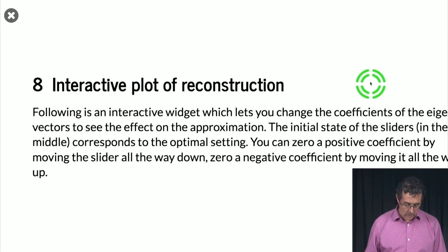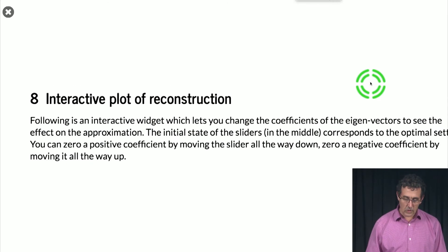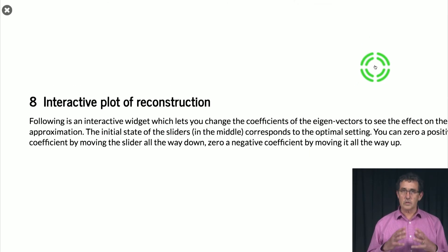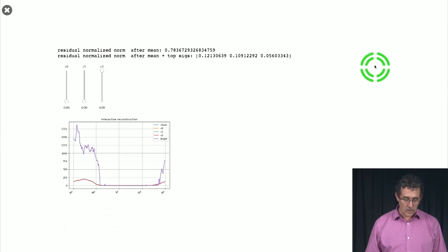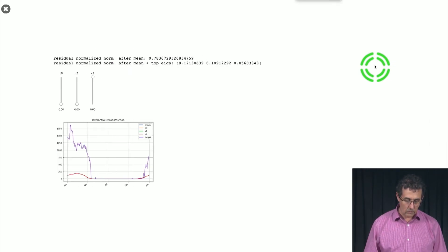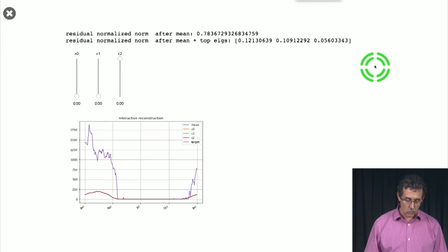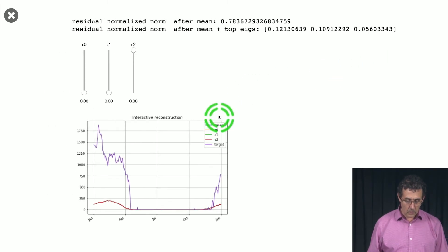Okay. So we've looked at these reconstruction for sets of sequences that we selected according to different criteria. Now, I'm going to show you a different way to look at it. You take a particular sequence, but then you play around with the parameters, with the coefficients. So this is this little widget here that you have also in your notebook. And what is it? Basically, right now, what we see is the red line is the mean.